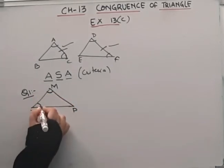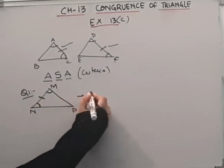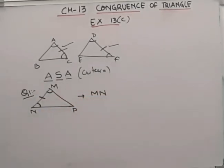We have to write the side which is included between the angles M and N. This is angle M. This is angle N. This side is side MN. Okay? This was a very easy question. Now we will come to question number 2.